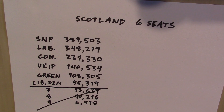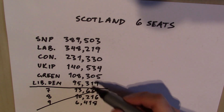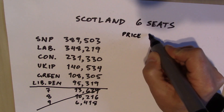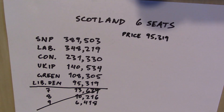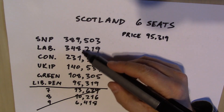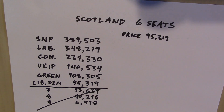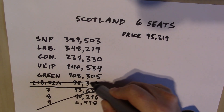So how many votes do you need per seat? In sixth place were the Liberal Democrats with 95,319 votes. What happens if we say the price of a seat is 95,319? Then all six of these parties will get a seat. But Conservative, Labour, and the Scottish National Party all have more than double the Liberal Democrats, so they will all get at least two seats — meaning we'd need nine seats in total. This is not going to work, so sorry Lib Dems, you cannot have a seat.